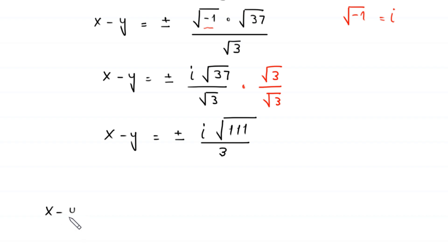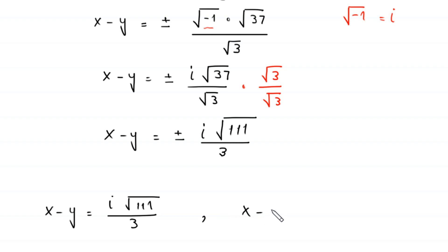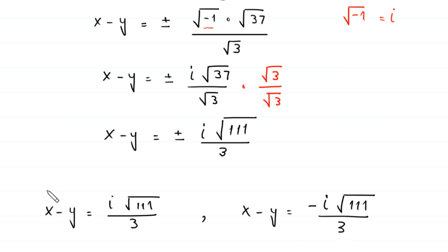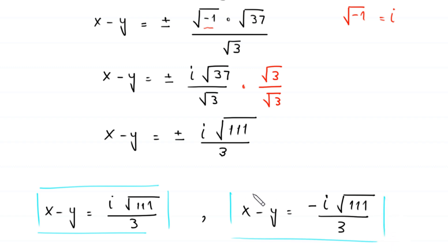So we get two values of x minus y. The first is x minus y equals i times root 111 divided by 3, and the second is x minus y equals negative i times root 111 divided by 3. These are the two solutions for x minus y.